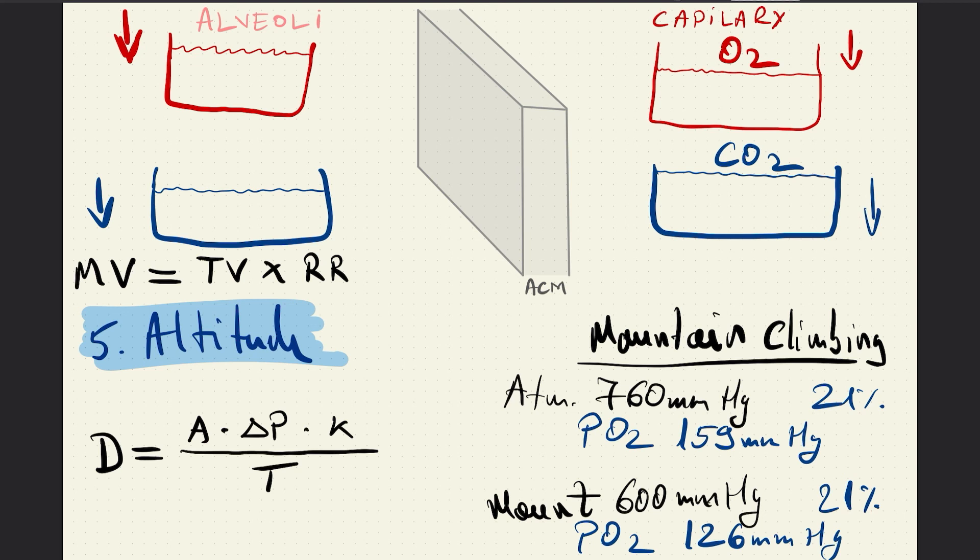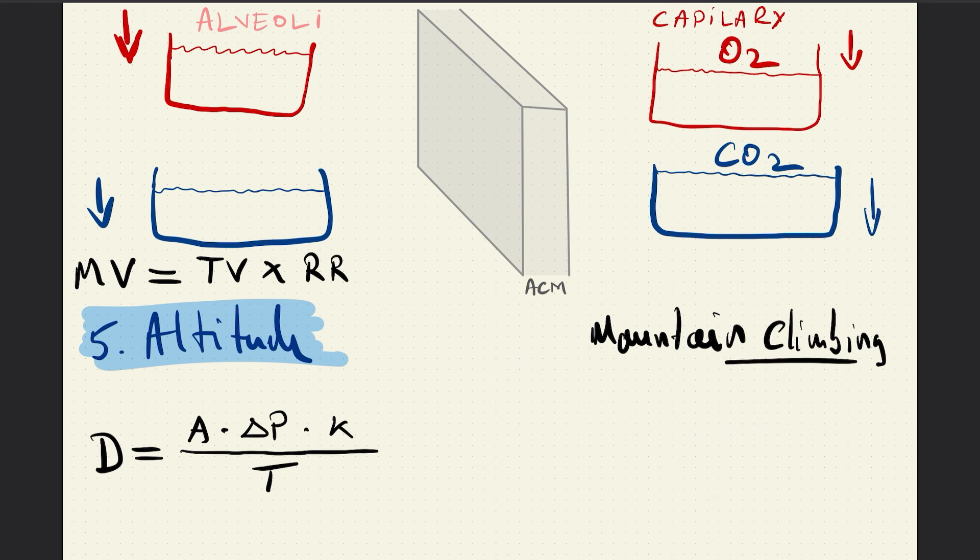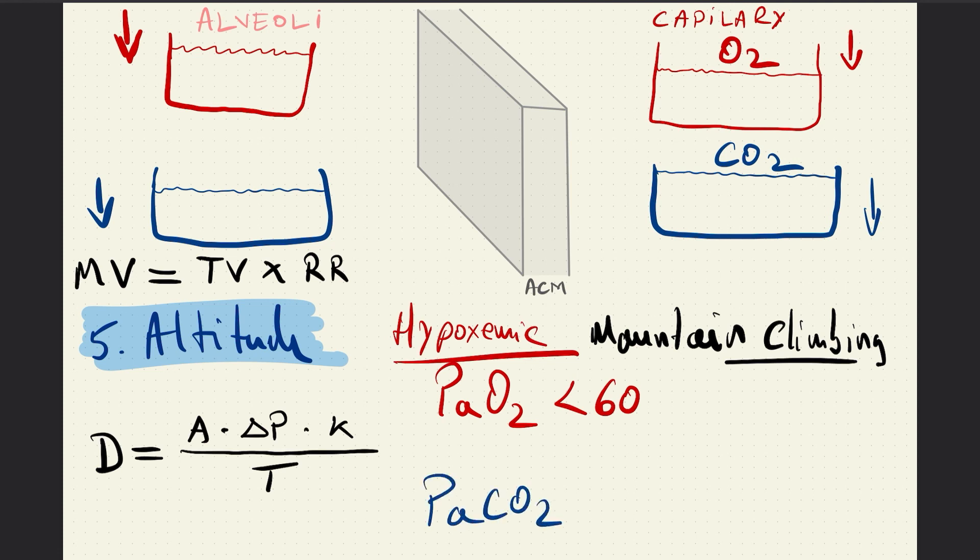So if we are to perform an arterial blood gas analysis on a mountain, you are left with arterial partial pressure of oxygen below 60, as your mountain climbers are hypoxemic. But in terms of carbon dioxide, the partial pressure of carbon dioxide is either normal or even low. Needless to say, the treatment would be oxygen administration as ventilation will not benefit the patient.